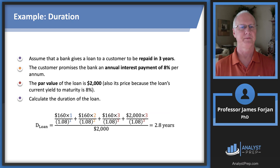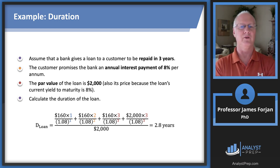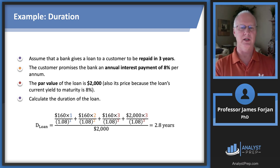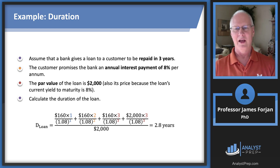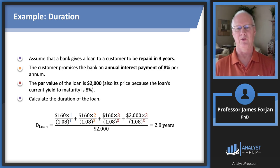Applying the duration formula to a loan: an eight percent annual coupon loan with a par value of 2,000 dollars produces cash flows of 160 dollars per year. Computing — 160 times 1 discounted one period, plus 160 times 2 discounted two periods, plus 160 times 3 discounted three periods, plus the maturity value discounted, all divided by the loan price — gives a duration of 2.8 years.